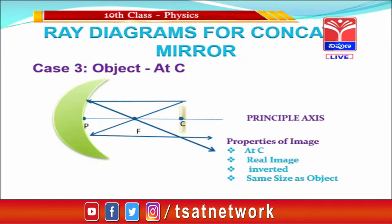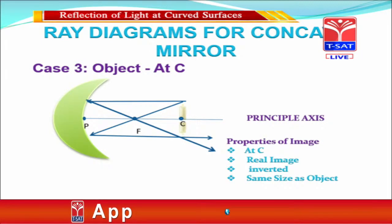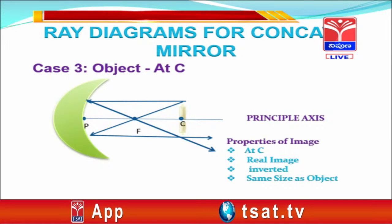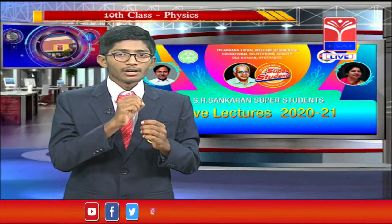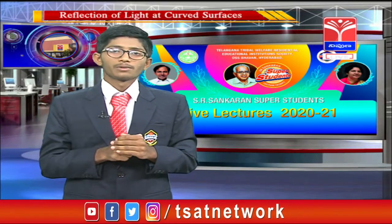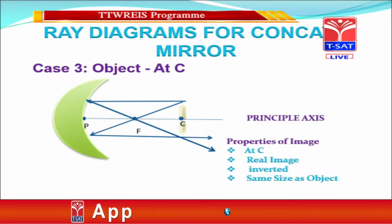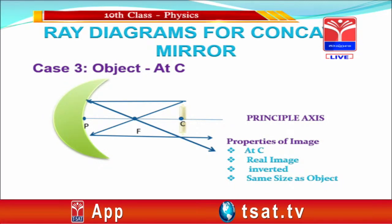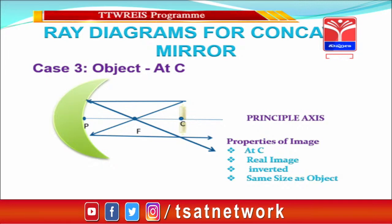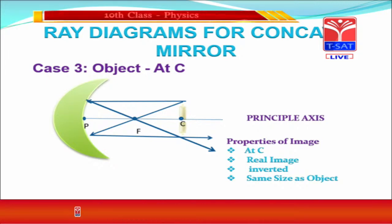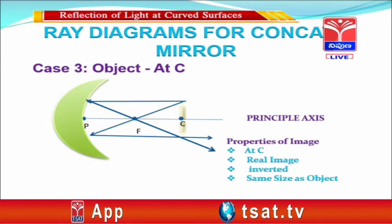In this case, we place the object at the center of curvature. The first ray moves parallel to the principal axis and passes through the focal point. The next ray passes through the focal point and on reflection travels parallel to the principal axis. The image formation takes place at C because these two rays intersect at that point. It is a real image and an inverted image, and the size of the image is the same as the size of the object.